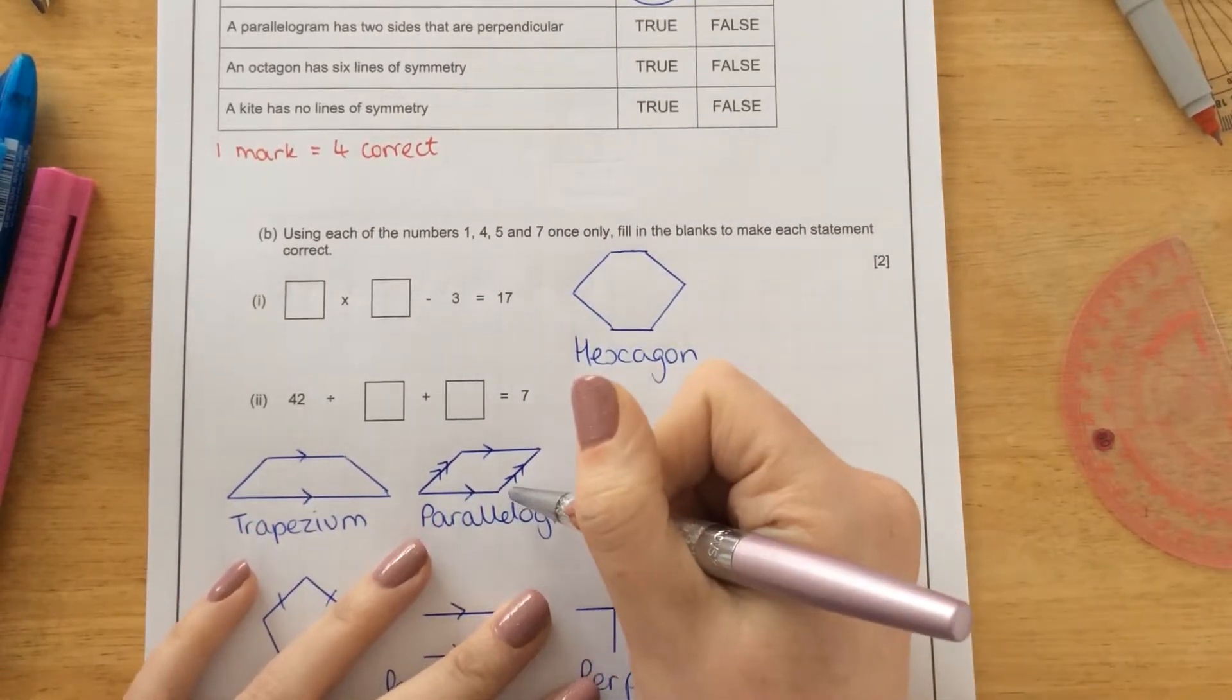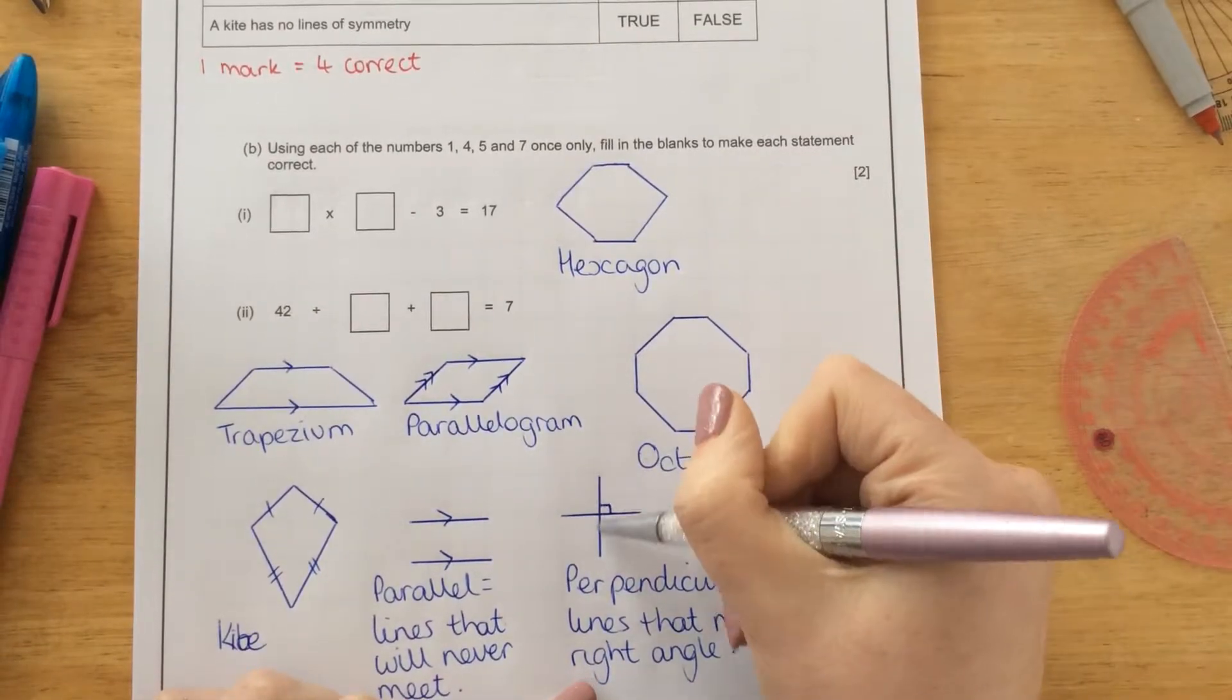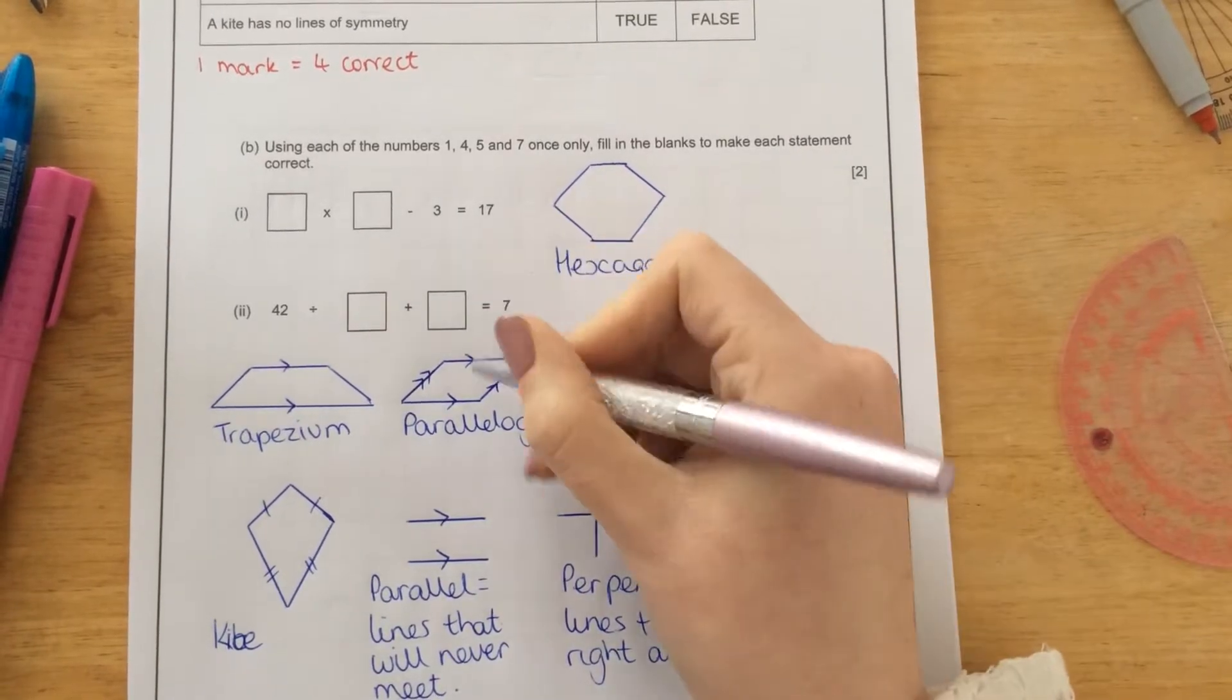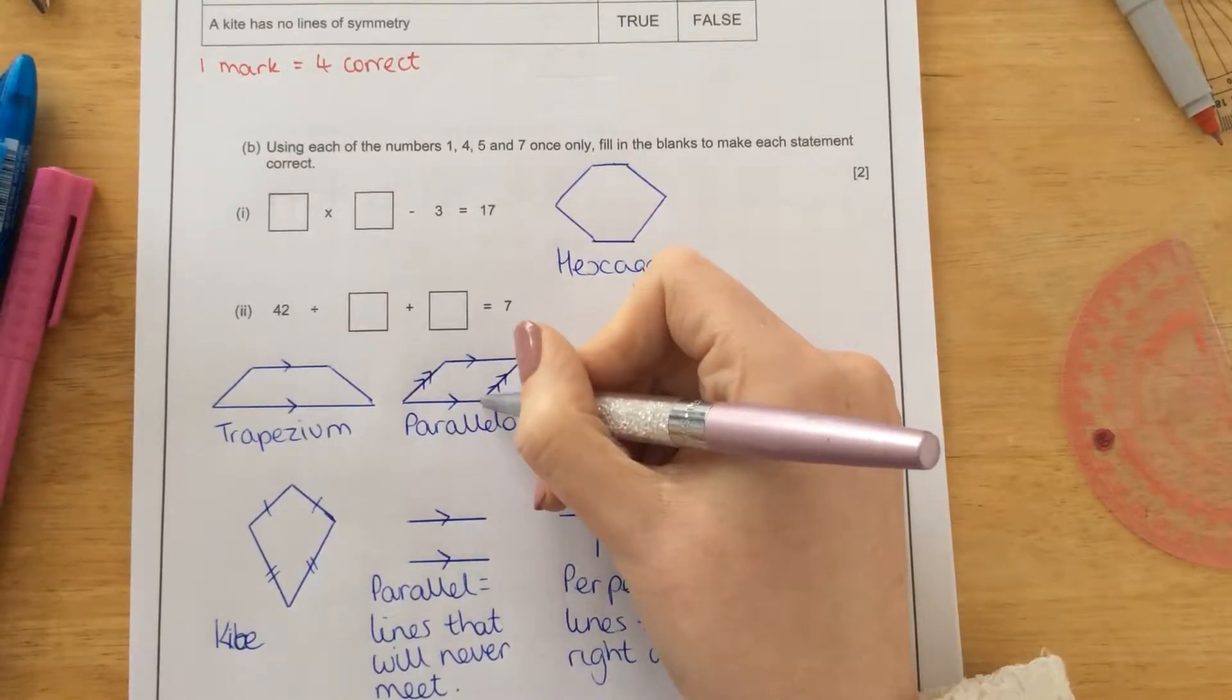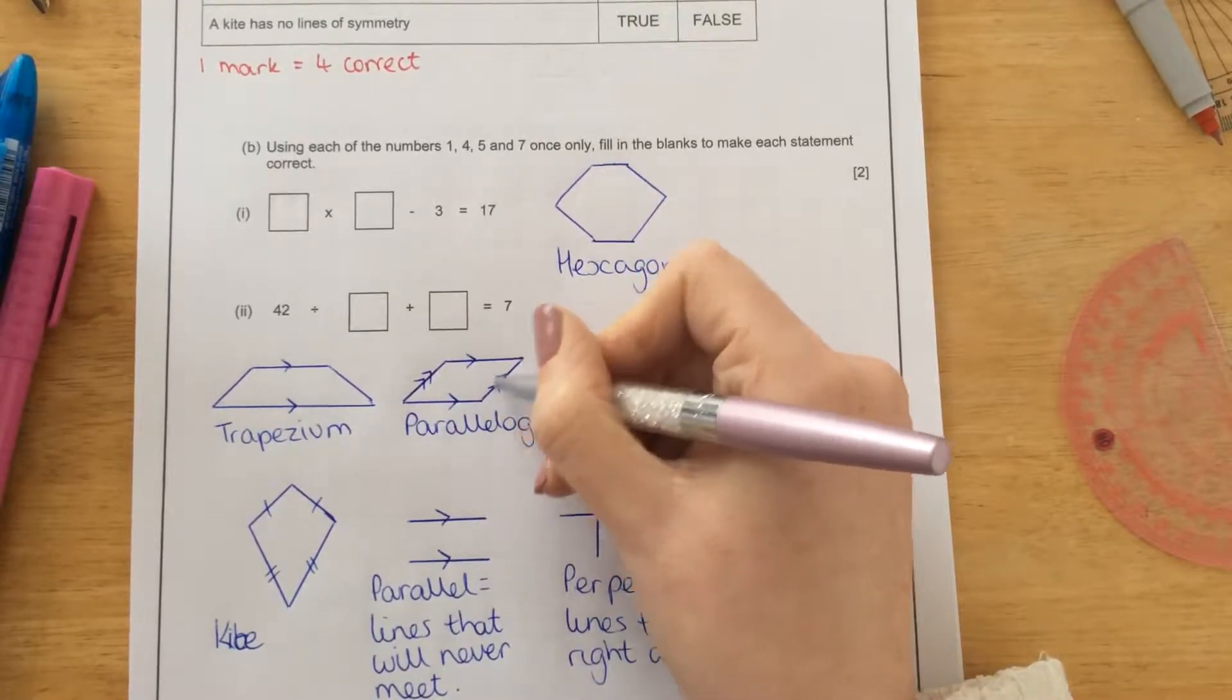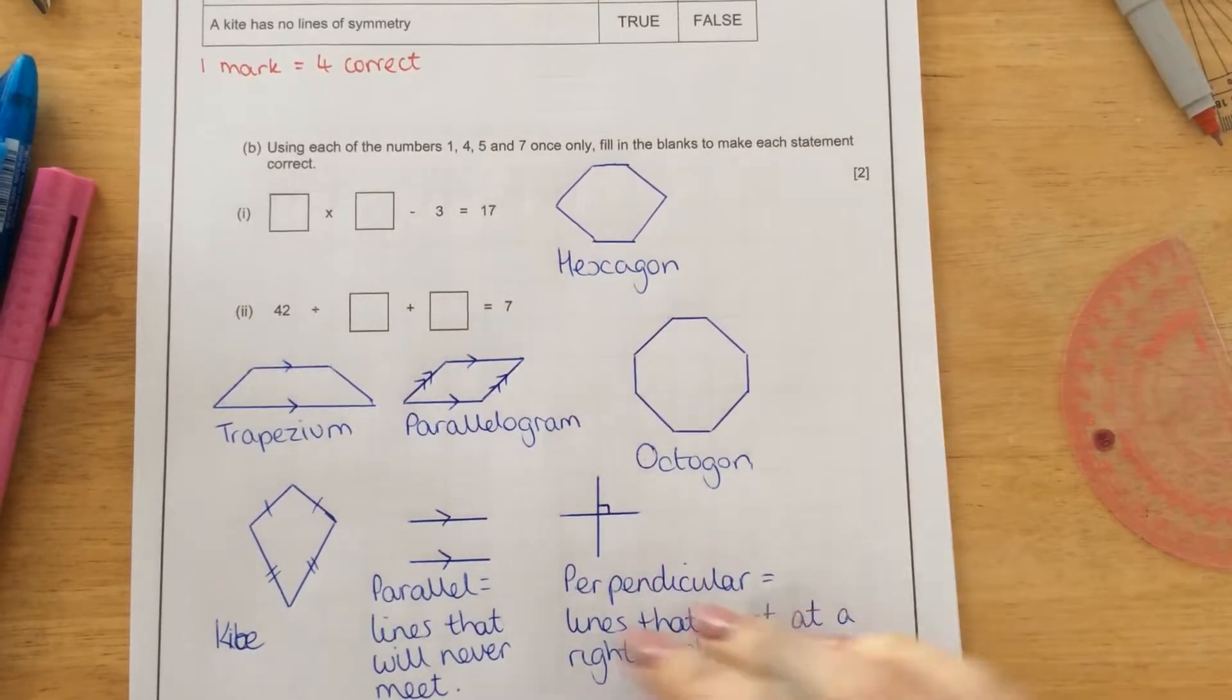So a parallelogram looks like this. Perpendicular means that two lines meet at a right angle. So none of these lines actually touch at a right angle. If I was to draw a line straight up here, that's not there. Here, here, here. So that is false.